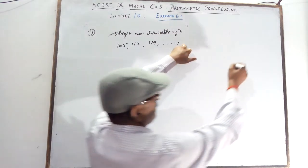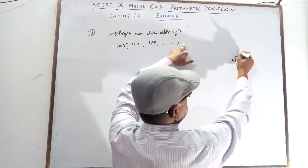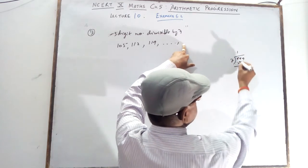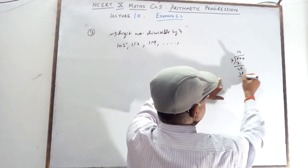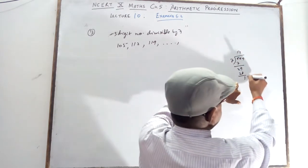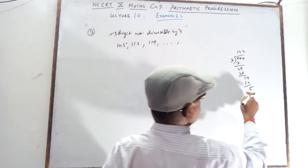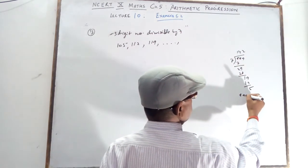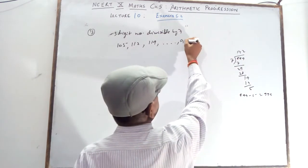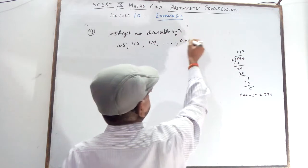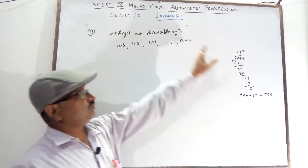For the last 3-digit number divisible by 7: the largest 3-digit number is 999. Divide 999 by 7 — the remainder is 5. So 999 minus 5 gives 994. So 994 is the last 3-digit number divisible by 7.